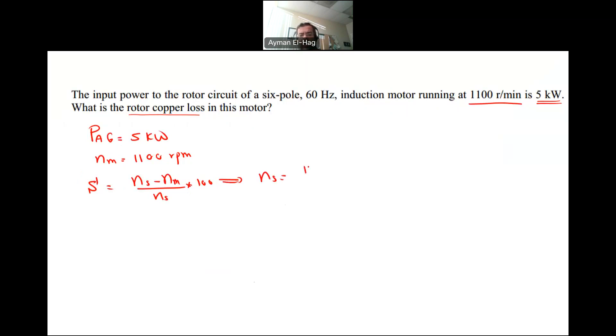So what is NS is equal to 120 times F divided by P, which is 120 times 60 divided the number of poles, which is here is 6. So this will give me 1200 RPM. And this is expected to be higher than NM. Always the synchronous speed is higher than NM. So from this, my S is equal to 1200 minus 1100 divided by 1200 and times 100. This will give me 8.33%.